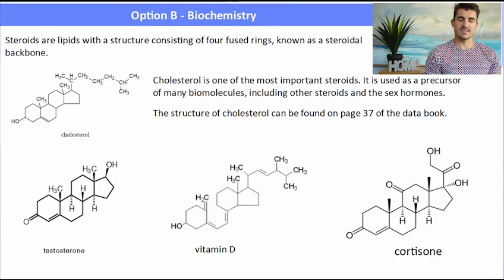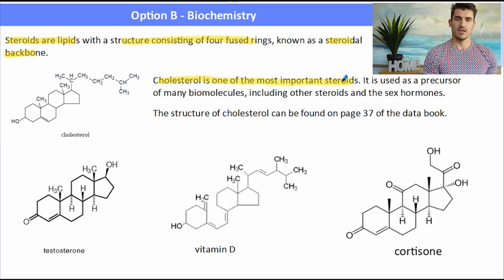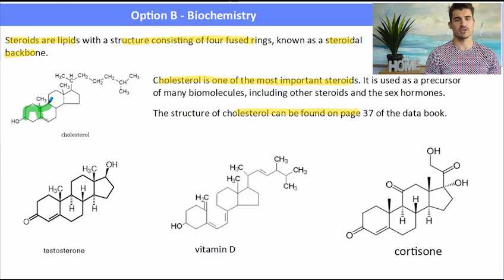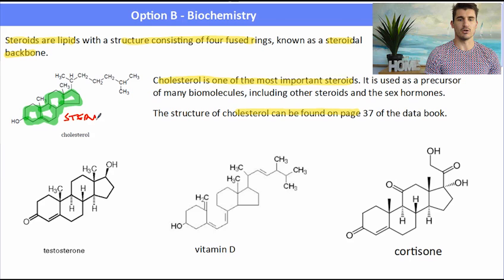Steroids are described as a lipid with a structure consisting of four fused rings known as a steroid or steroidal backbone. Cholesterol is one of the most important steroids because it's a precursor in many biomolecules. I've highlighted the steroid backbone, which is also the backbone for a number of different molecules that are formed in the body.